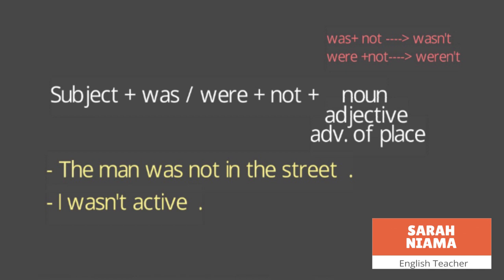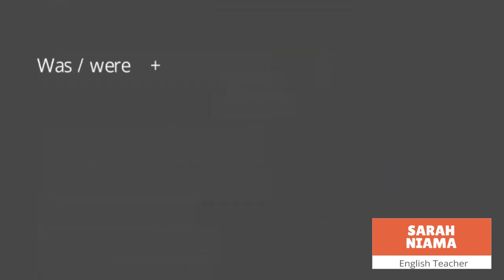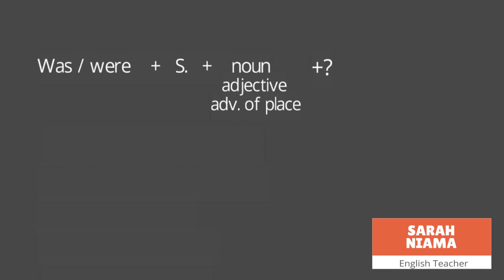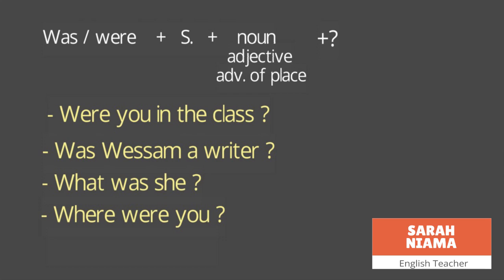To make a question, we bring 'was' or 'were' to the beginning of the sentence. The rule is: was/were plus subject plus noun, adjective, or adverb of place, plus question mark. Example: 'Were you in the class?' — 'were' is the auxiliary verb, 'you' is the subject, 'in the class' is the adverb of place. 'Was Sam a writer?' — 'was' because 'Sam' is a singular subject, 'a writer' is the noun.